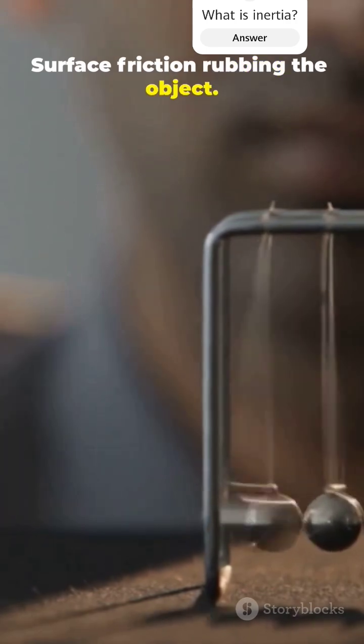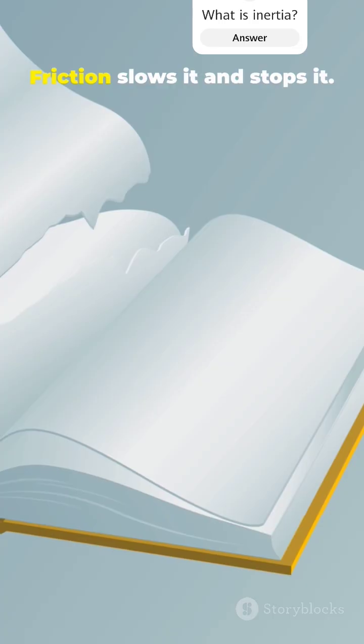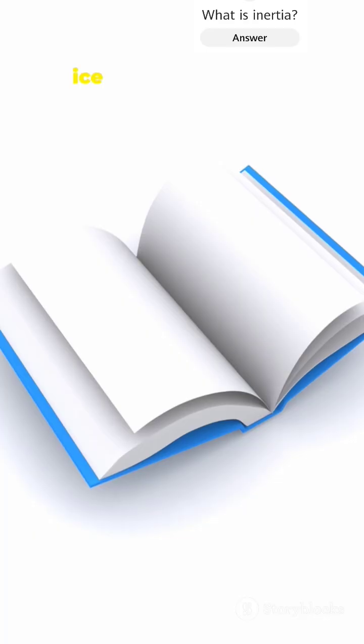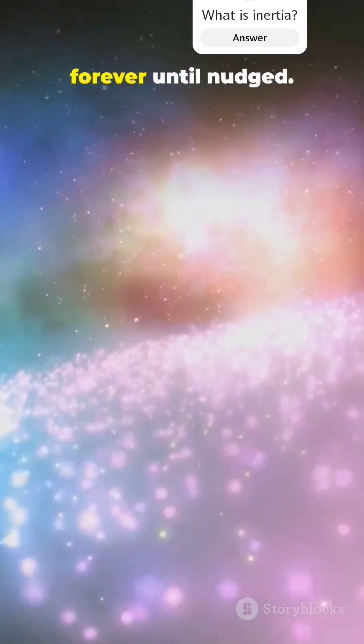Surface friction rubbing the object. A crash abruptly changes motion. Push a book across a table. Friction slows it and stops it. On ice the book glides with little friction. In space it floats with no friction. It would glide forever until nudged.